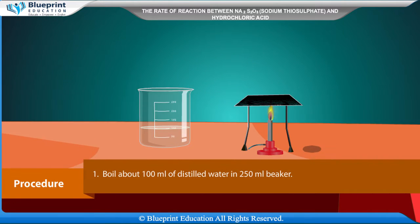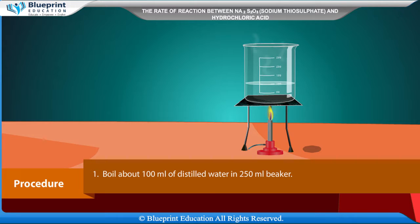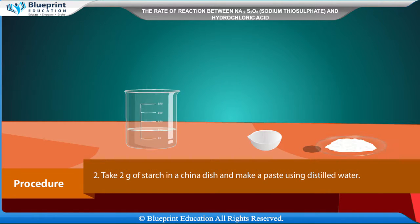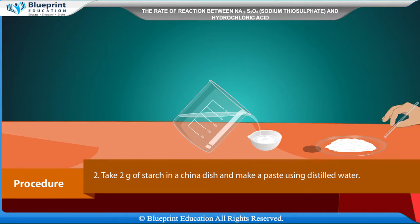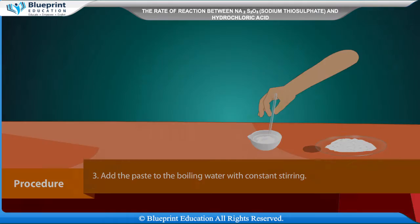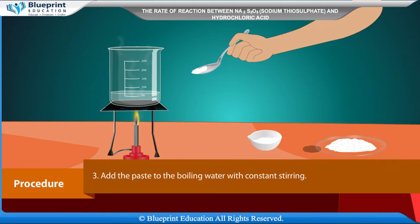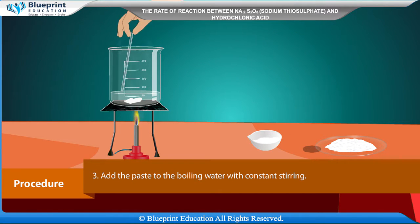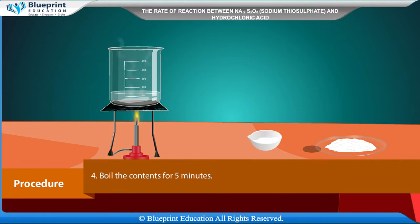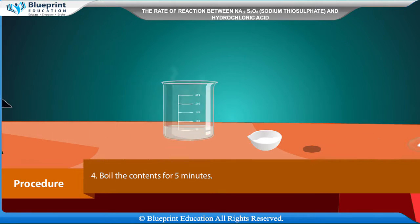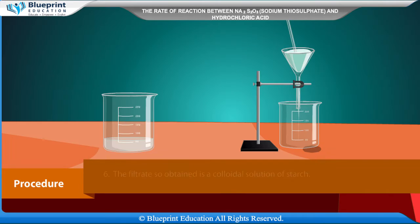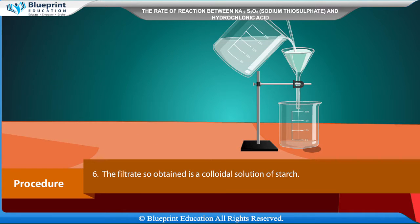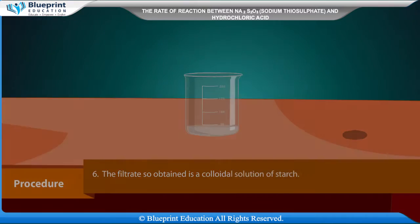Procedure: Boil about 100 ml of distilled water in a 250 ml beaker. Take 2 grams of starch in a china dish and make a paste using distilled water. Add the paste to the boiling water with constant stirring. Boil the contents for 5 minutes. Cool to room temperature and filter. The filtrate so obtained is a colloidal solution of starch.